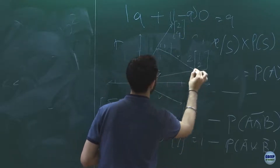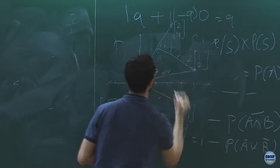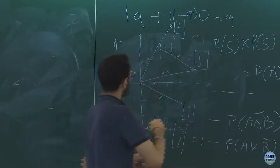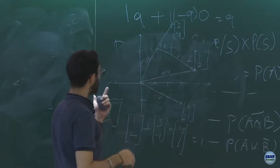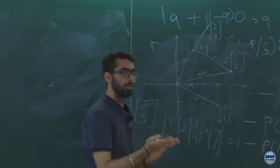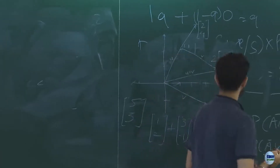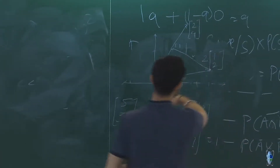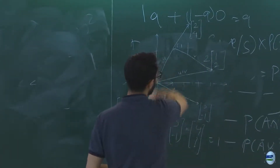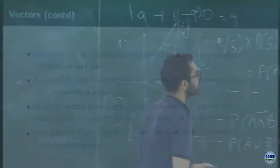This vector turns out to be u plus v. Most of the times we will be looking at vectors that are rooted at the origin. This is the only time we will be moving a vector in a particular direction.